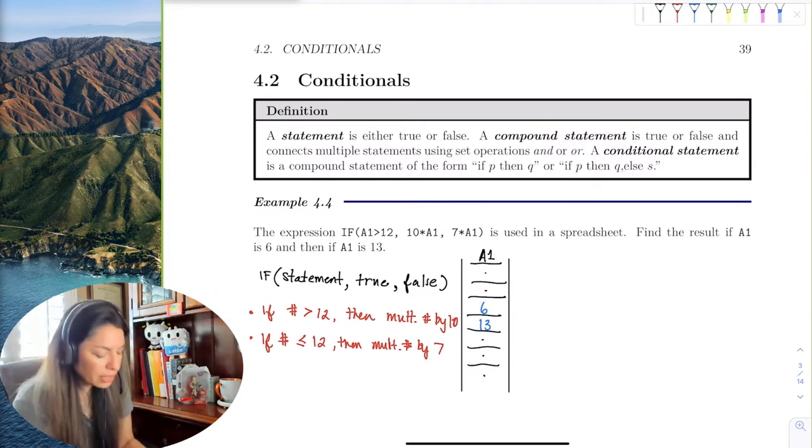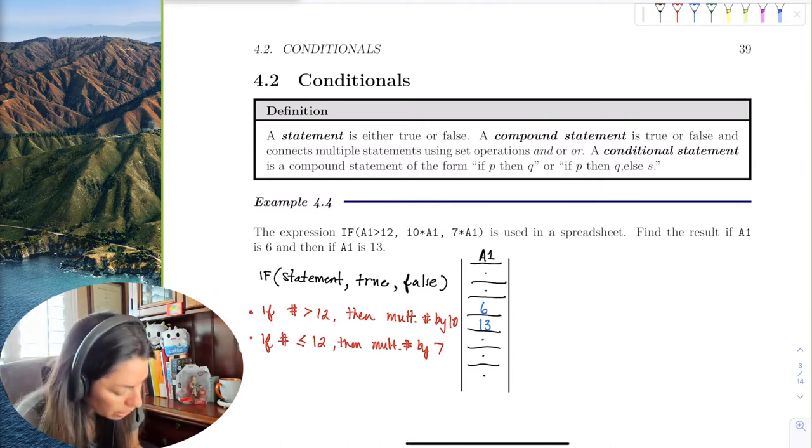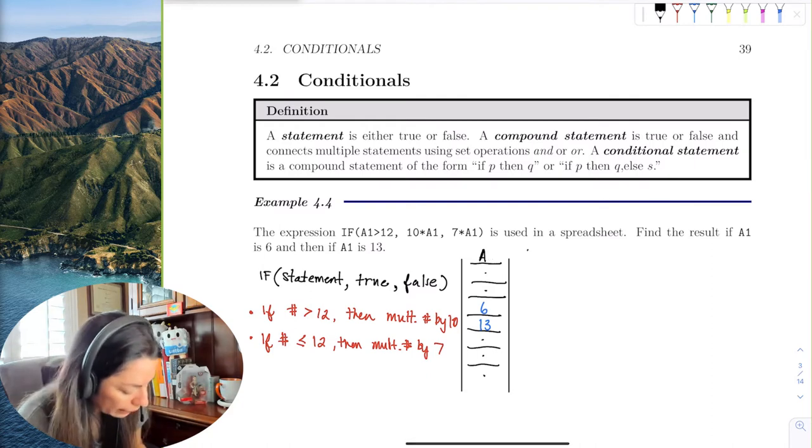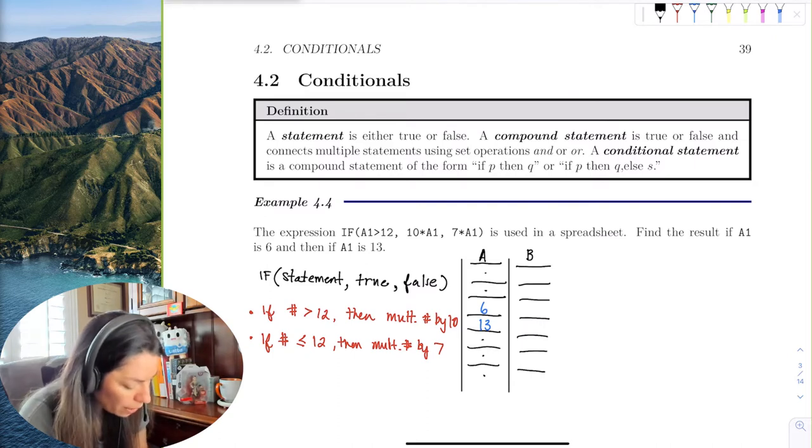And so what this column is going to do, this next column we'll call it B, and what these give is the result.